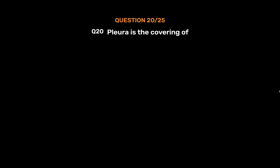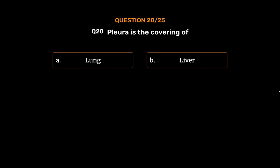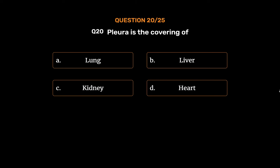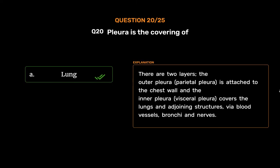Question No. 21: Pleura is the covering of — Option A: Lung, Option B: Liver, Option C: Kidney, Option D: Heart. The correct answer is Option A, Lung. There are two layers: the outer pleura (parietal pleura) is attached to the chest wall, and the inner pleura (visceral pleura) covers the lungs and adjoining structures via blood vessels, bronchi, and nerves.